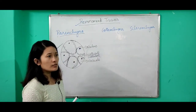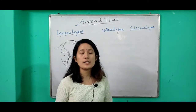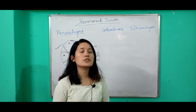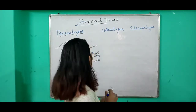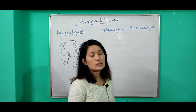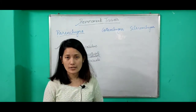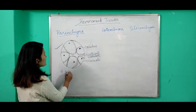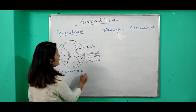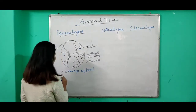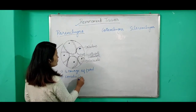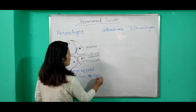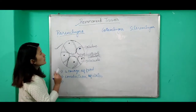Parenchyma cells are present in most parts of the plant. Even the outermost covering — the epidermis — is made up of parenchyma cells, and all different plant organs like roots, stem, and leaves are also made up of parenchyma cells. The function of parenchyma cells includes storage of prepared food and conduction of water from roots to the stem.